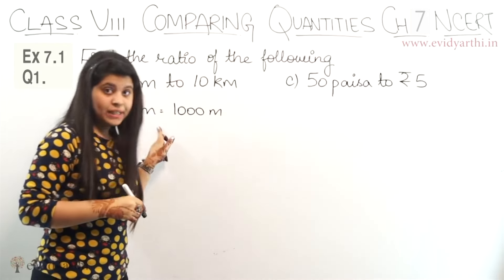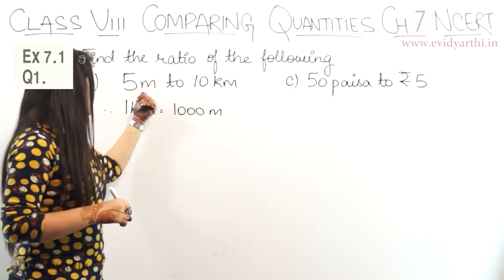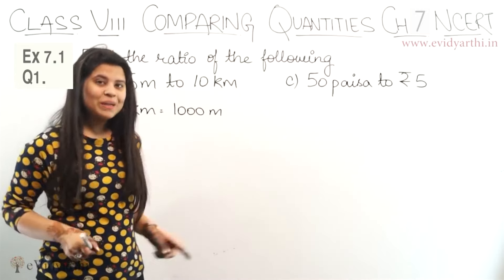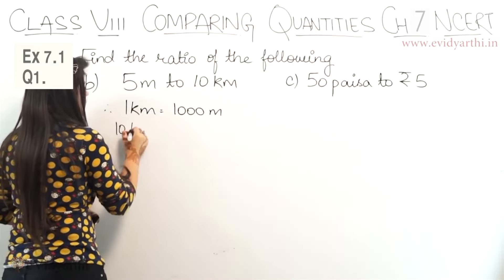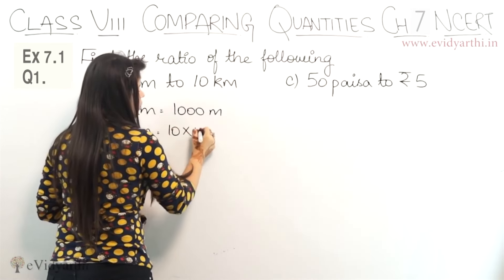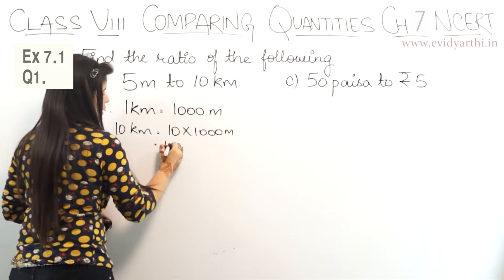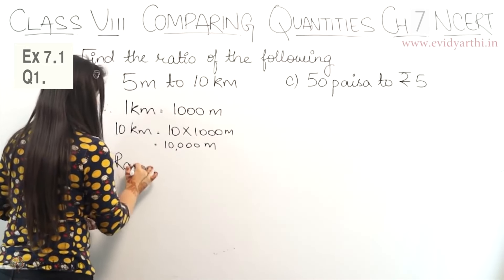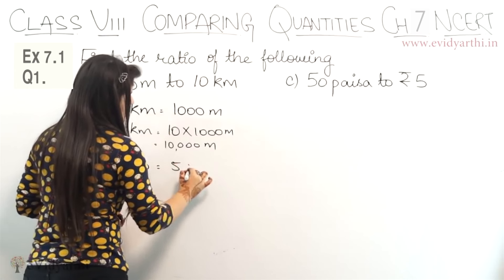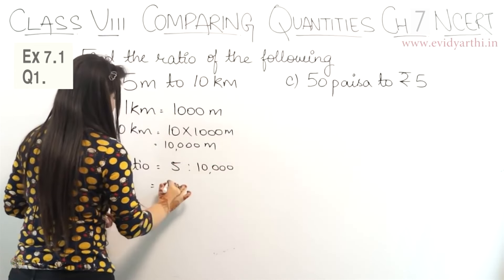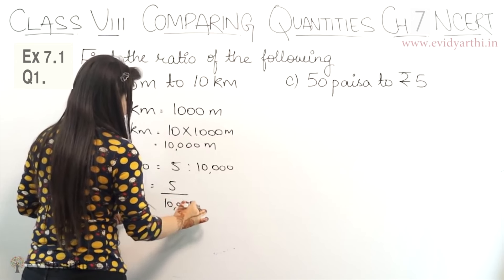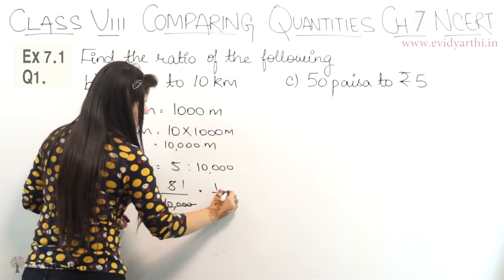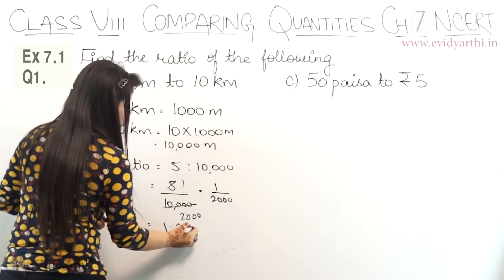We can either convert 5 meters to kilometers or convert kilometers to meters. If we convert 5 meters to kilometers, the answer will be in decimals, so instead we convert 10 kilometers to meters. 10 kilometers equals 10 into 1,000 meters, which means 10,000 meters. Now the ratio will be 5 to 10,000, which is 5 upon 10,000 = 1 upon 2,000, or 1 ratio 2,000.